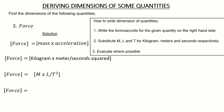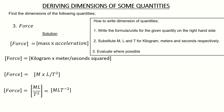Writing this in math form: kilogram becomes capital M, meters becomes L, per seconds squared becomes per T squared. So we have M times L divided by T squared, which is the same as ML over T squared. This can also be written as MLT⁻². This is the dimension for force — my final answer.